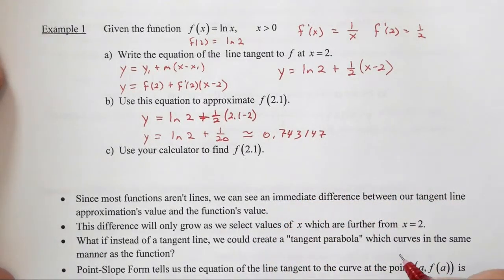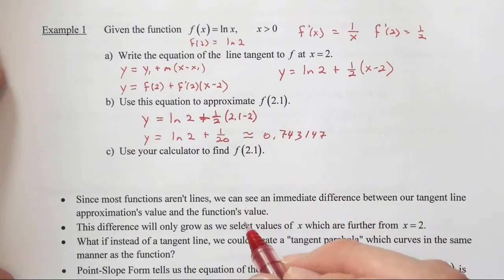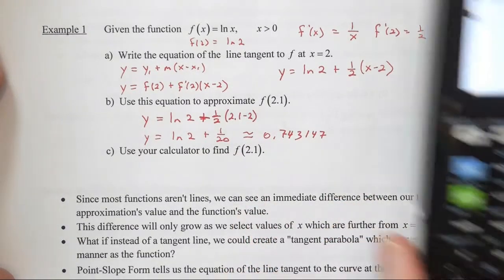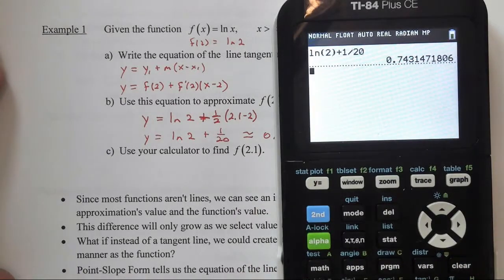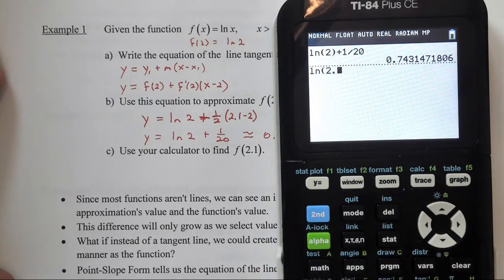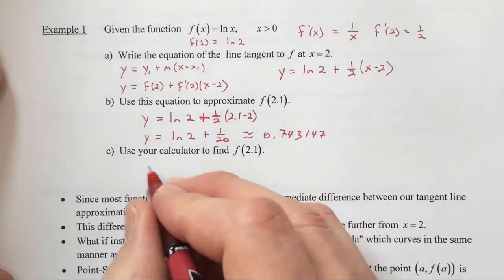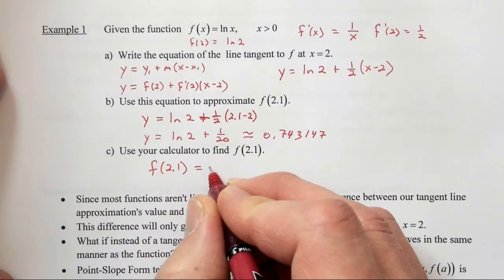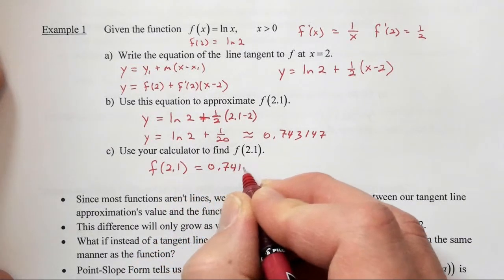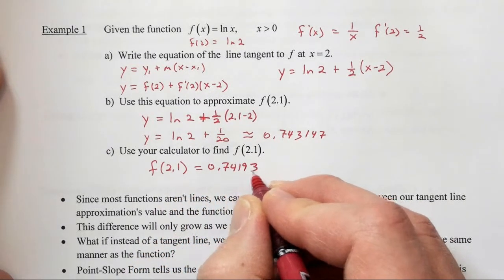Now we want to use our calculator to actually find f of 2.1. So if we go back to our machine and we find the natural log of 2.1, we see that it's 0.741937. So f of 2.1 is 0.741937.